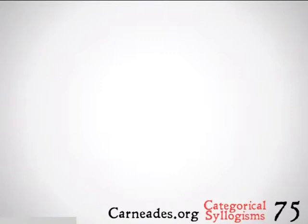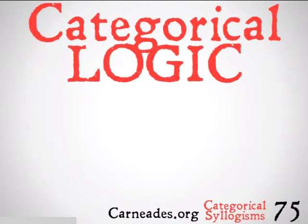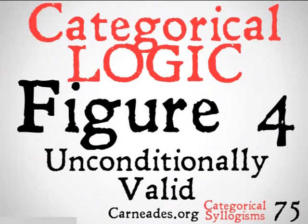Welcome back to 100 Days of Logic with 90 Second Philosophy and Carnedis.org. Today we're going to be continuing with Categorical Logic and Categorical Syllogisms, looking at the unconditionally valid forms of Figure 4.